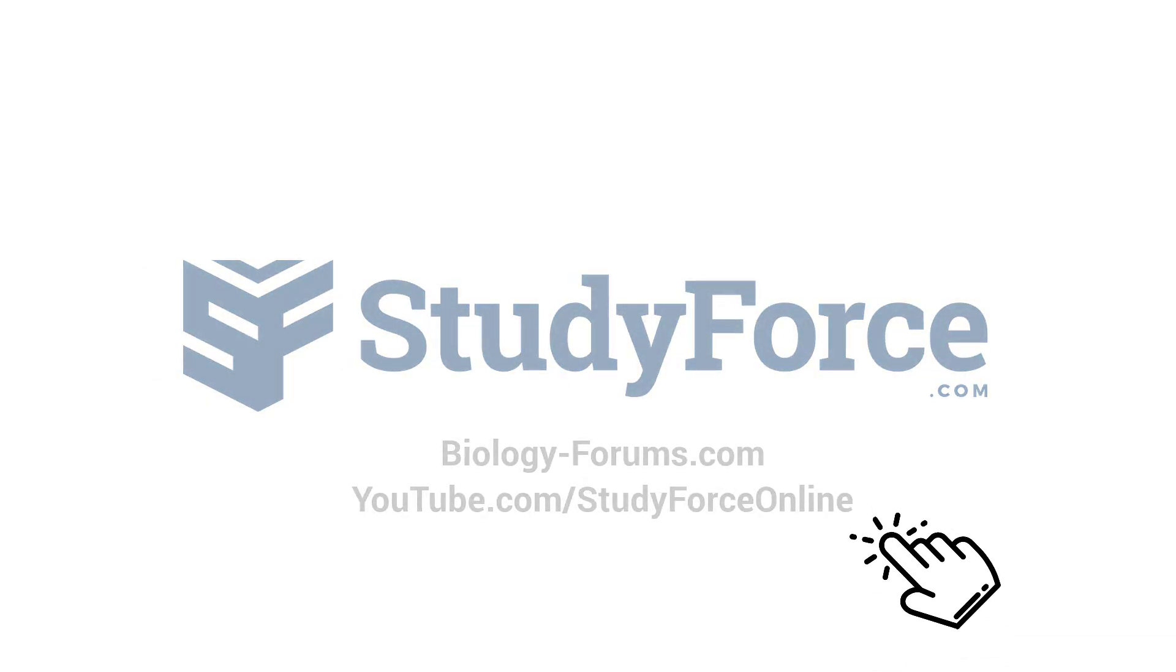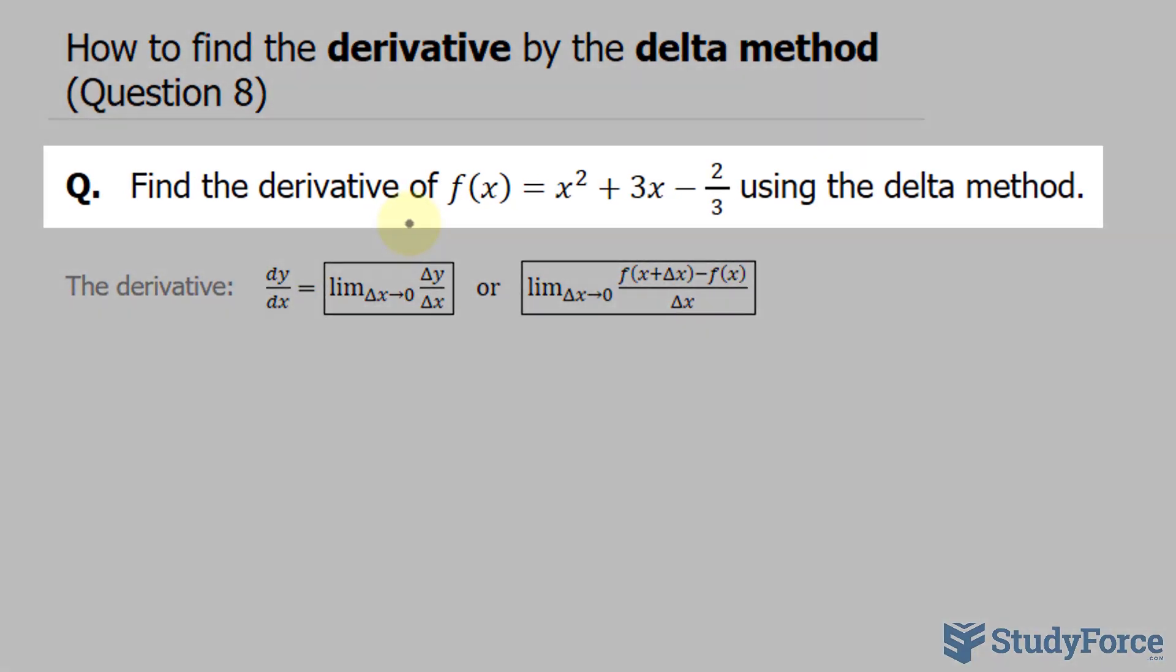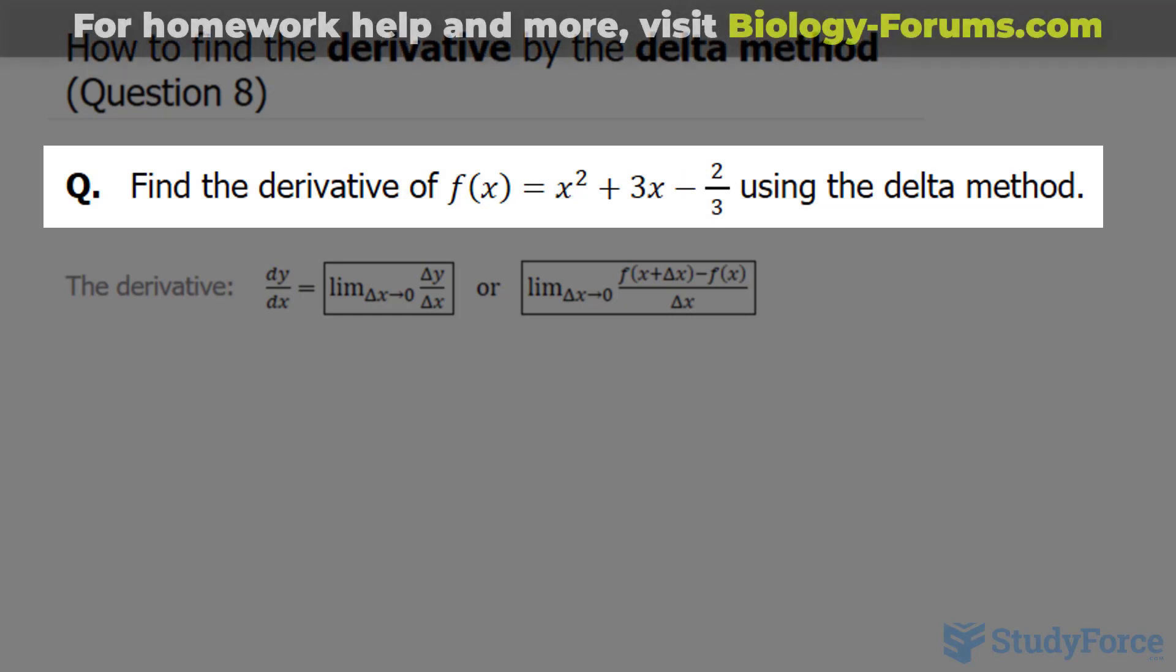In question 8 of this series, where we find the derivative by the delta method, we have another function, and this time it is a quadratic, where we have the a, b, and c term present. Let's go ahead and figure this out.